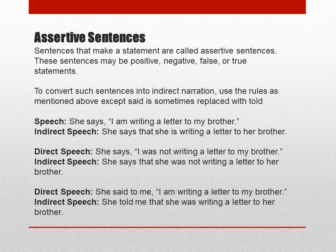Let me tell you about assertive sentences first. An assertive sentence is a statement. These statements may be positive, negative, true, or false. When you want to convert an assertive sentence into indirect narration, we have to follow certain rules.